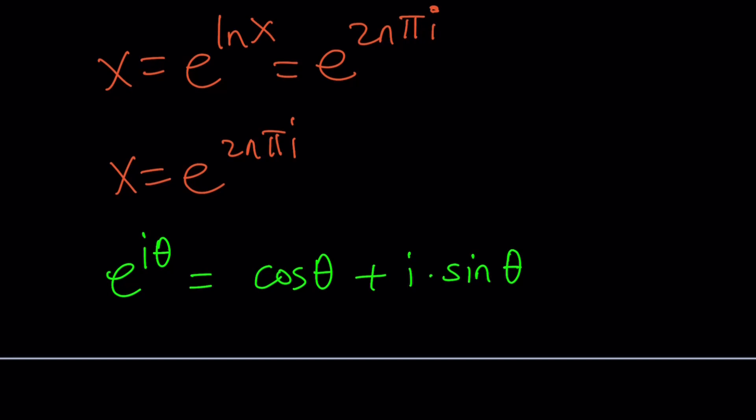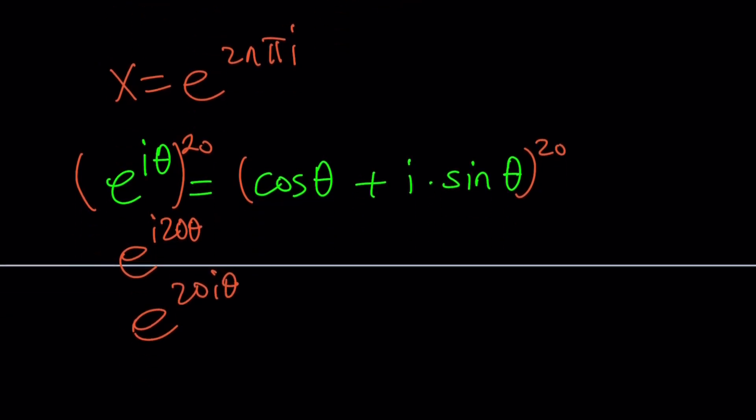Now, this is awesome because it allows you to turn a complex number in the form x + yi to an exponential form. And working with exponentials is a lot easier. For example, you can take this expression, raise it to the, I don't know, 20th power. And then it's just going to be e to the power 20iθ.